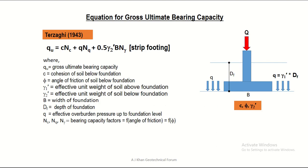This is the Terzaghi's equation proposed back in 1943. Karl Terzaghi proposed it for strip footing, where the width of the footing is very small compared to the length. For example, a footing 1.2 meters wide and 30 meters long is a strip footing situation. This is also called plain strain condition because the length is far greater than the width. The same applies to an earth embankment — strip footing also refers to plain strain condition.